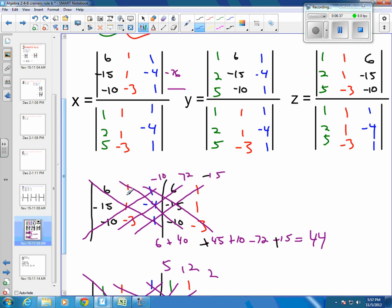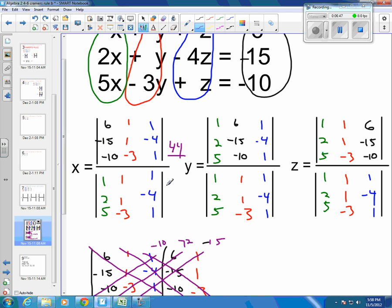And so, then this will be, let's fix this one up here. This should be a 44 on top. It should be a negative 44 on the bottom. And so, your answer x should end up being a negative 1.